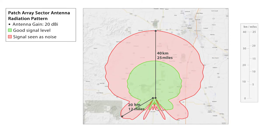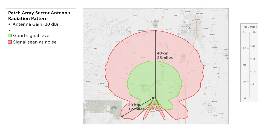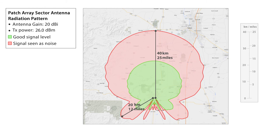Most users think side lobes only affect co-located APs, but they are a huge receptor of noise from much greater distances than one might think. Now let's look at how introducing high power radios in combination with these high gain antennas really reduces the spectrum efficiency of your radiating station and creates more noise for you.